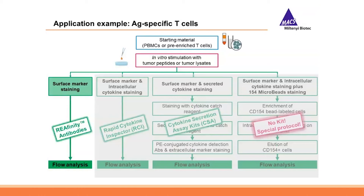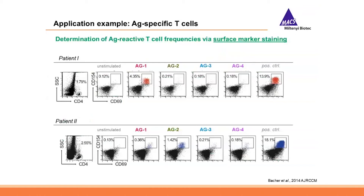Looking at the first option, surface marker staining: here we see the analysis of antigen-specific T-cells from patient samples as shown by Bacher et al. in 2014. This patient suffered from invasive fungal infection. Patient samples were stimulated with PepTivator peptides and cells subsequently stained with CD4, CD154, and CD69. Unstimulated cells served as a negative control and SEB as a positive control. Indeed, both patients showed elevated levels of antigen-specific T-cells.